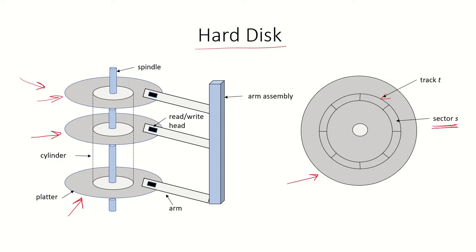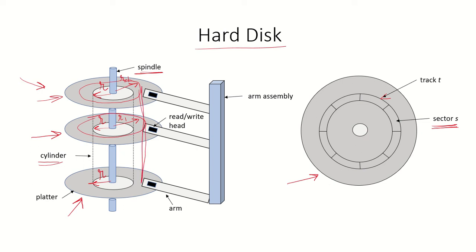All these platters are connected together using a spindle. The distance of a track from the spindle — say a track at radius r — then the same track on each platter at the same radius will form a cylinder. So tracks equidistant from the center are referred to as one cylinder. Similarly, another track at radius r1 on the various platters would form another cylinder.